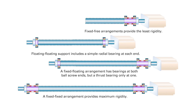Another method to improve rigidity is to use a larger diameter screw shaft. Increasing the screw shaft diameter increases its rigidity, and it also requires a larger diameter ball nut and larger end bearings, which will also contribute to better rigidity.